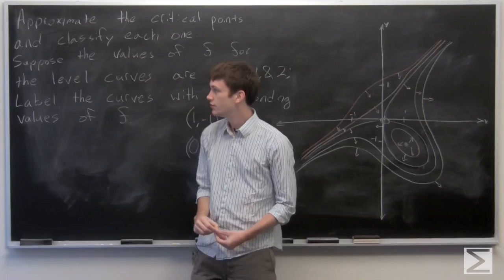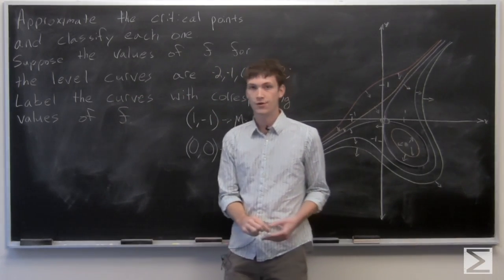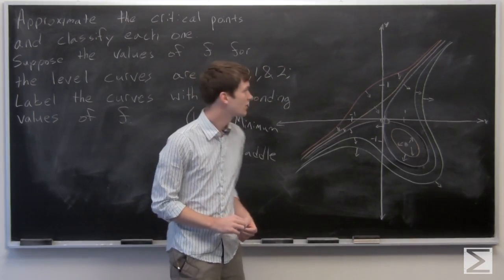And now we want to suppose that the values of the level curves are negative 2, 1, 0, 1 and 2, and 2, and then label the curves correspondingly.